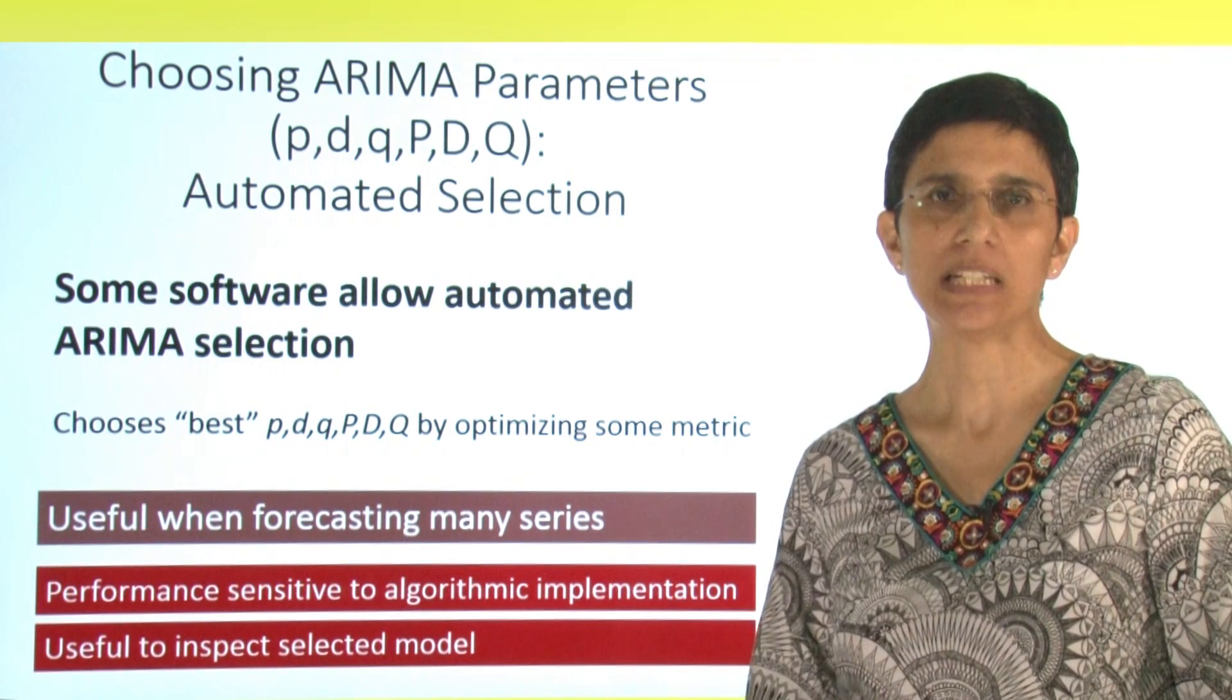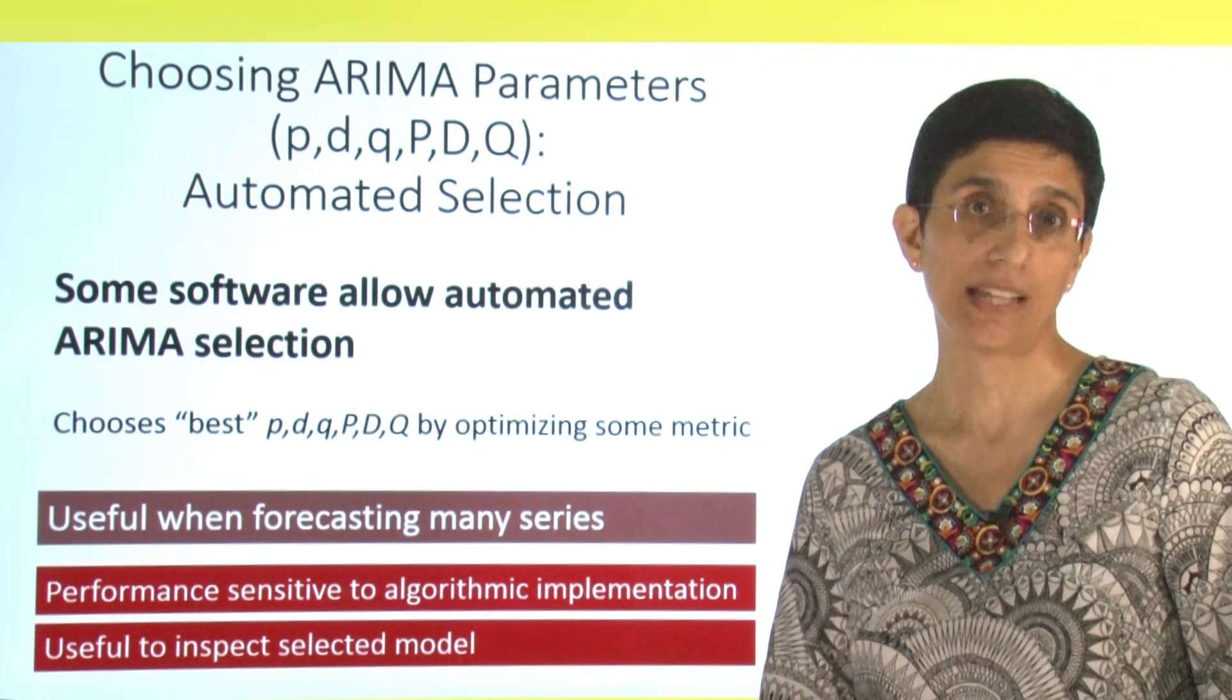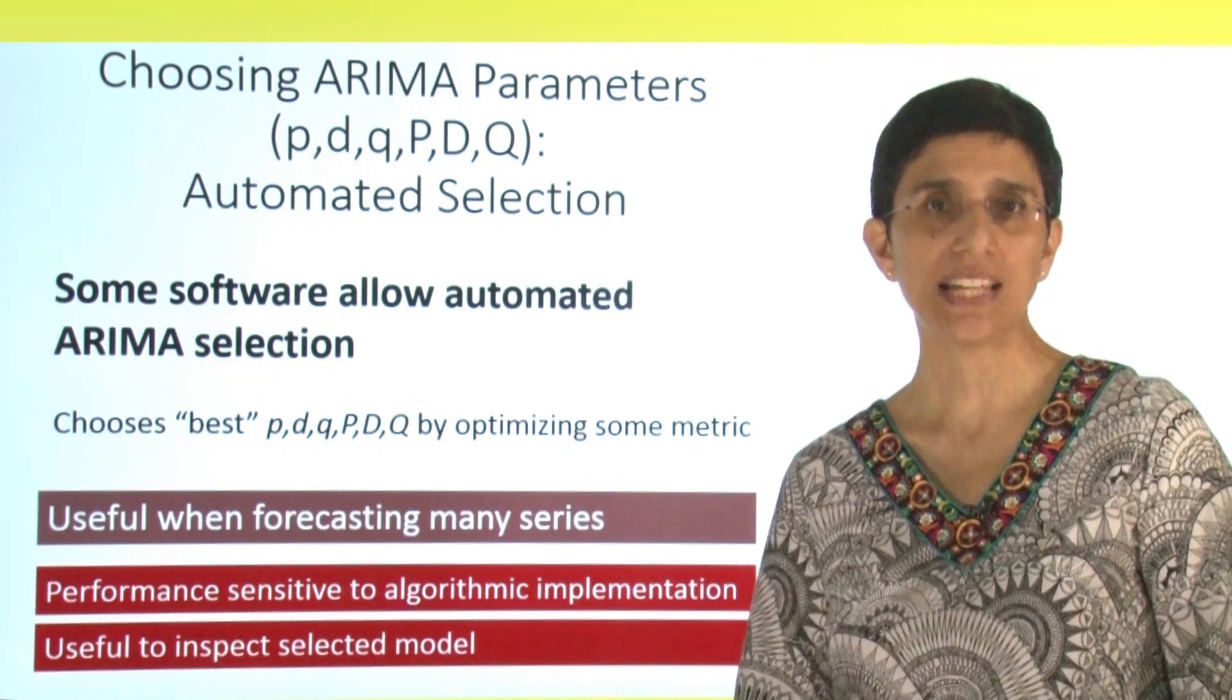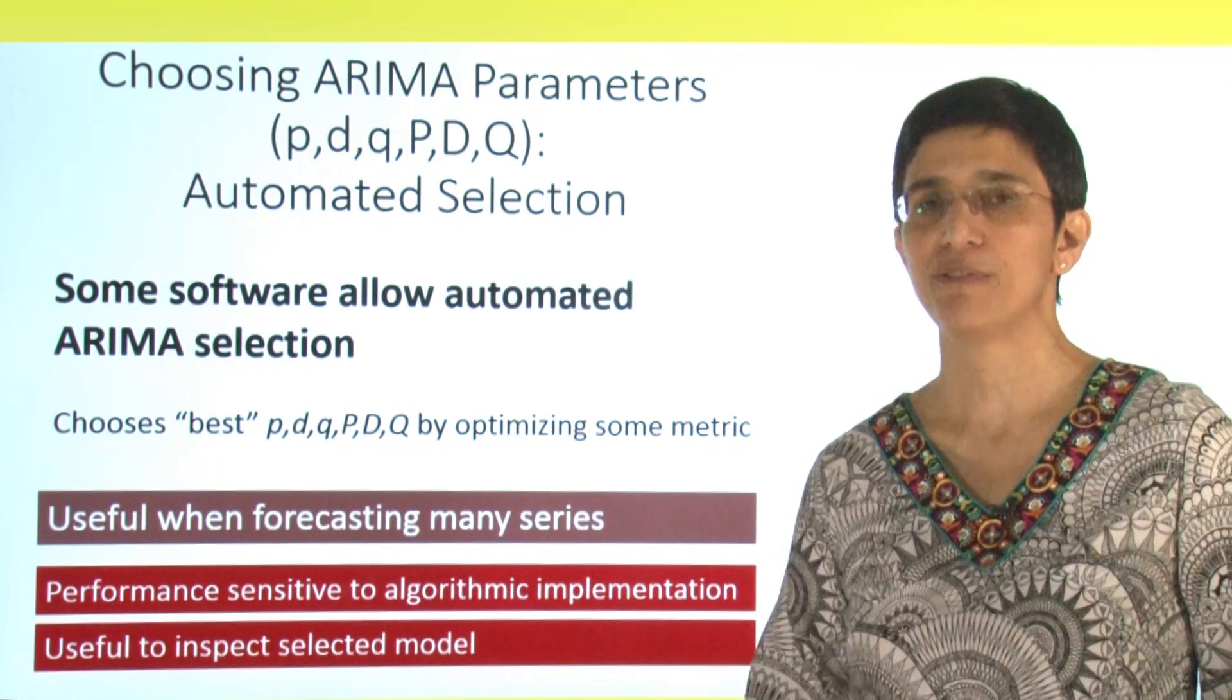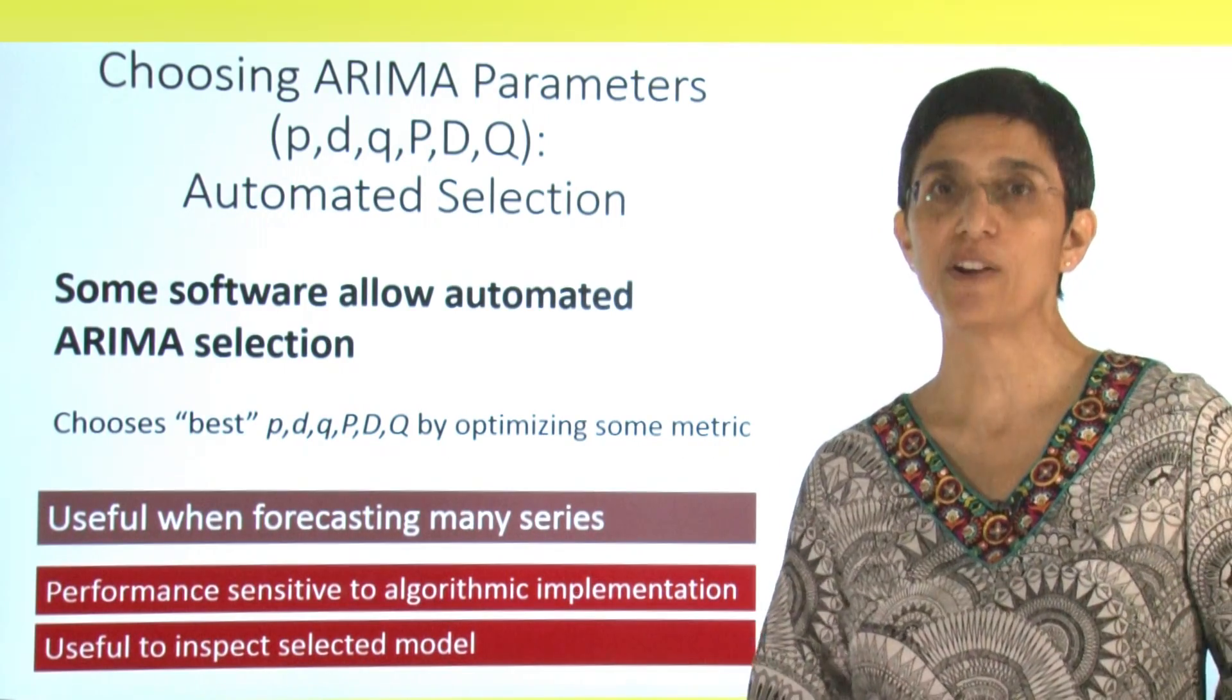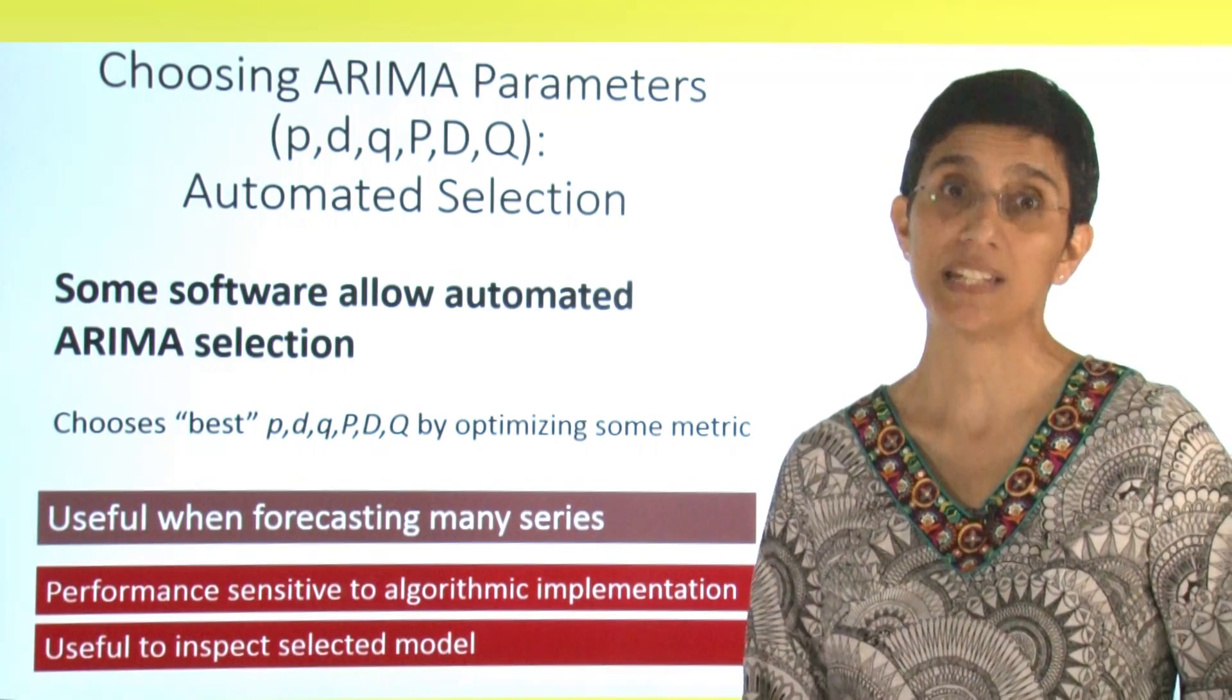Luckily, some software allows automated selection of these parameters. They try a whole range of values and choose the best model according to some metric. This is very useful, especially if we have to forecast many series, which is the case in big data.